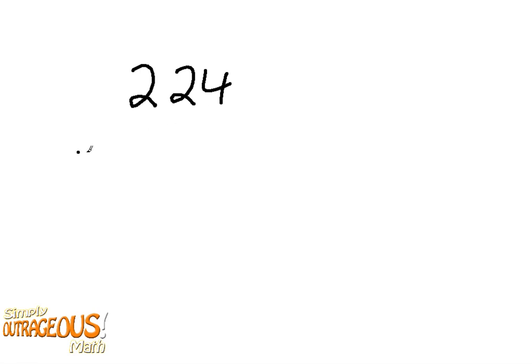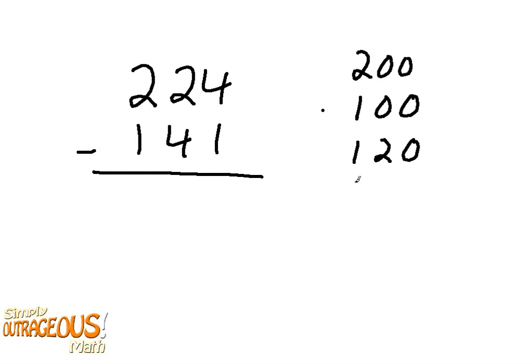224 minus 141. 200, 100, 120, 100, 80, 84, 83. 200 minus 100 is 100, 100 plus 20 is 120. 120 minus 20 is 100, plus another 20 is 80. 80 plus 4 is 84, and 84 minus 1 is 83.